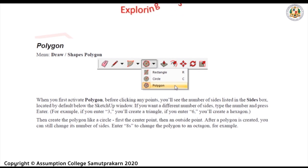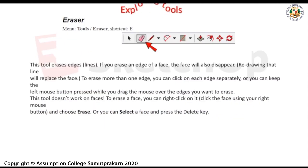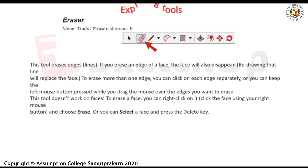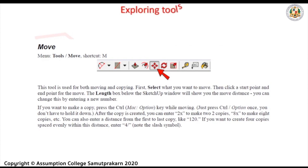If you want a different number of sides, type the number and press Enter. For example, if you enter 3, you'll create a triangle; if you enter 6, you'll create a hexagon. Then create the polygon like a circle — first the center point, then an outside point. After a polygon is created, you can still change its number of sides; enter 8S to change it to an octagon, for example. Next is the Eraser (shortcut key: E). This tool erases edges. If you erase an edge of a face, the face will also disappear. To erase more than one edge, click on each edge separately or drag the mouse over the edges you want to erase. To erase a face, right-click on it and choose Erase, or select the face and press the Delete key.